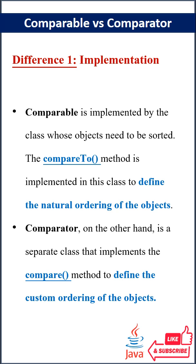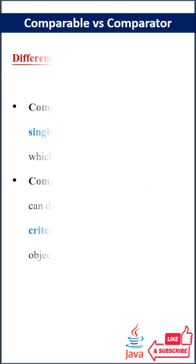First difference, in terms of implementation. Comparable is implemented by the class whose objects need to be sorted. The compareTo method is implemented in this class to define the natural ordering of the objects. Comparator, on the other hand, is a separate class that implements the compare method to define the custom ordering of the objects.